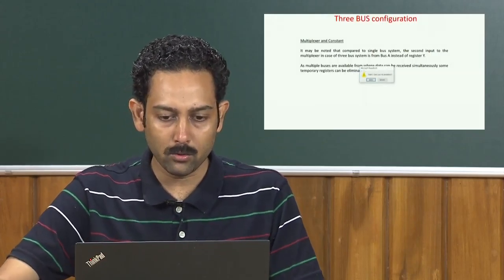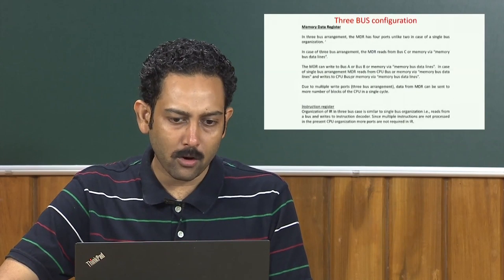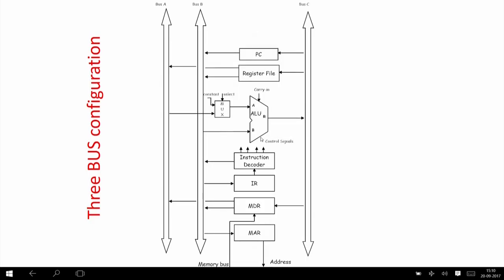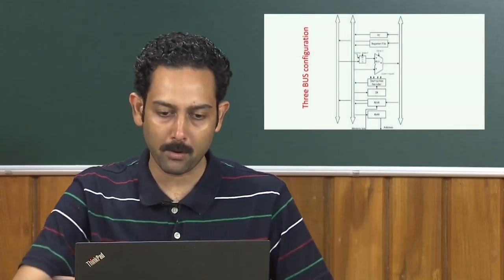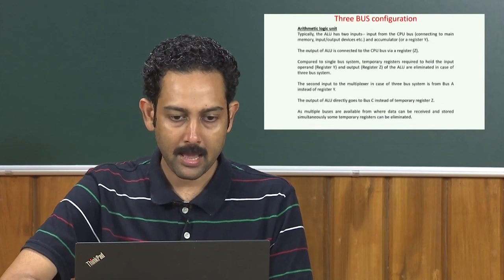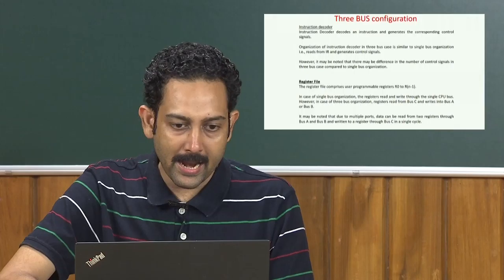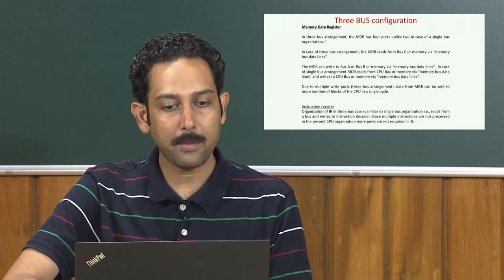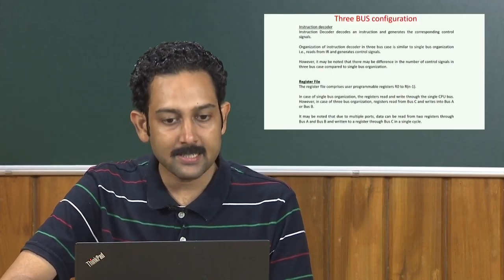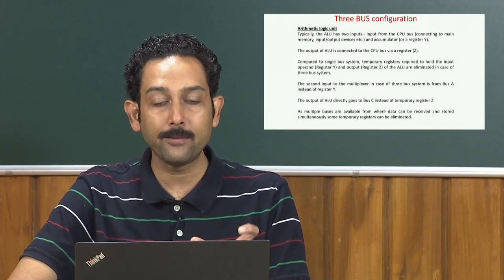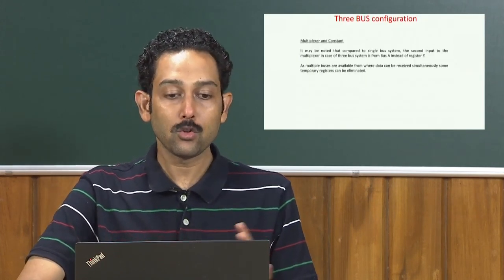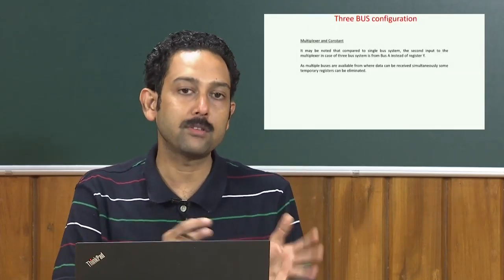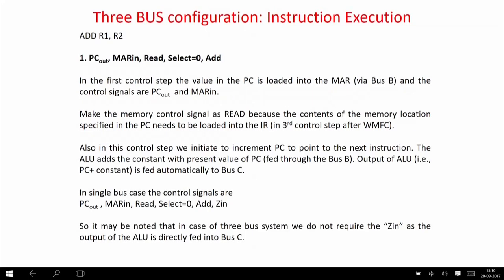Multiplexer and constant do not change — their job is simply to take an operand or constant for incrementing the program counter. In summary, what changes in three-bus architecture compared to single bus architecture are: the program counter, memory data register, register file, and the arithmetic logic unit in terms of eliminating temporary registers. These changes occur because there are more buses available. We will now take two examples — one showing clear advantages of three buses, and one showing a case where the advantage is not as significant.